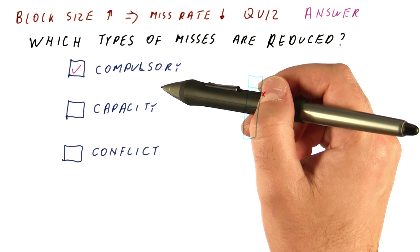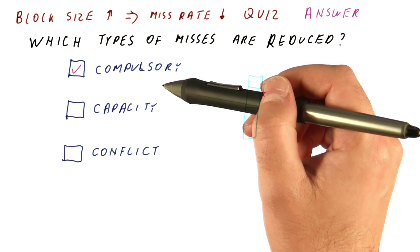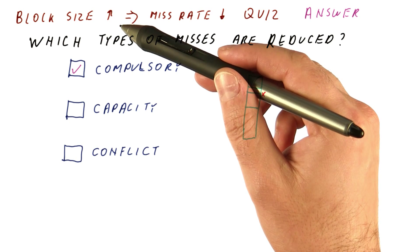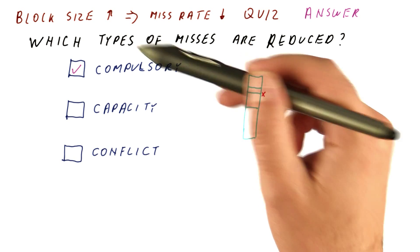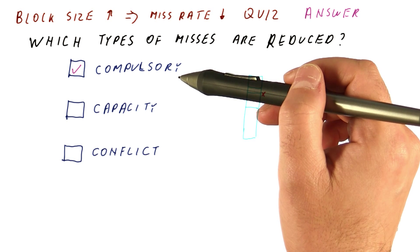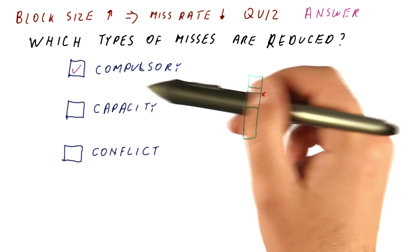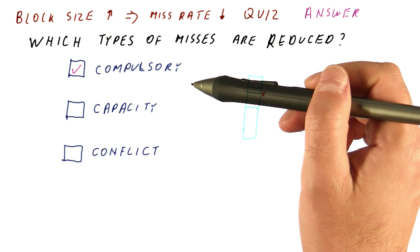Another way to look at this is to note that we get a compulsory miss when we access the block for the very first time. Well, if you have larger blocks, there are fewer blocks, so there are fewer blocks to access for the very first time. And that will guarantee a reduction in compulsory misses, assuming there is any spatial locality.